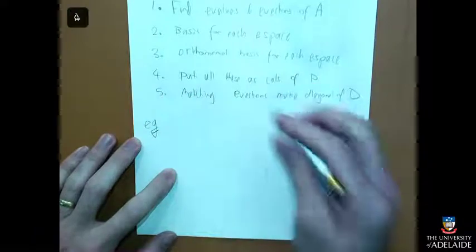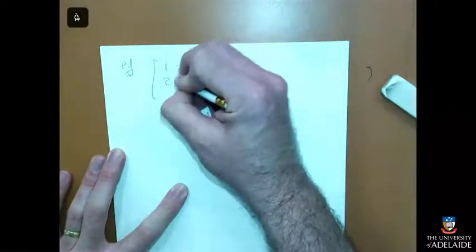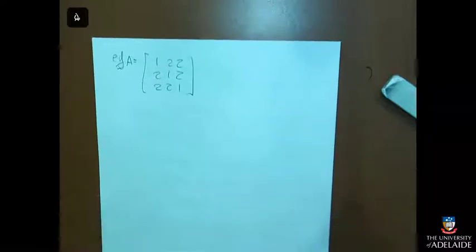Let's do an example. I know just by looking at this matrix that one of its eigenvalues is five, because all the rows add up to five. If all the rows add up to the same number, that has to be one of the eigenvalues. So I know I should be getting a lambda minus five somewhere.